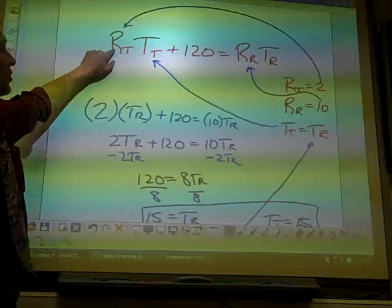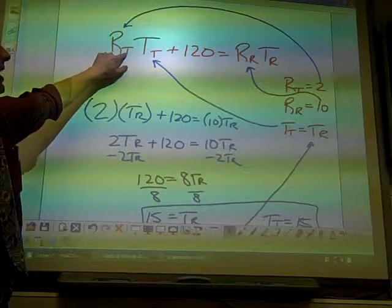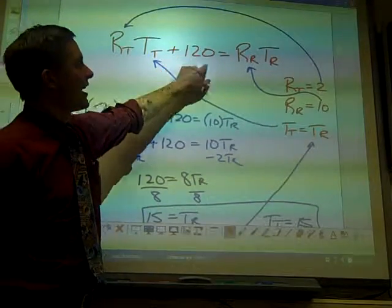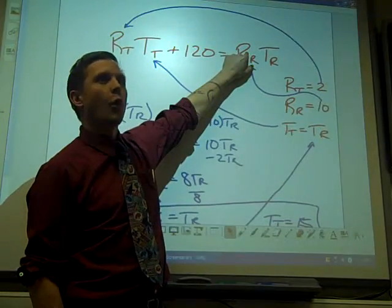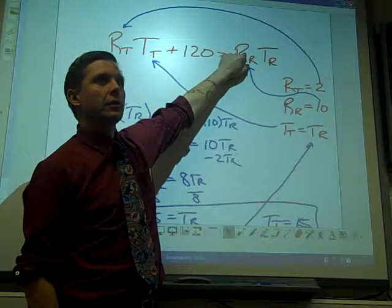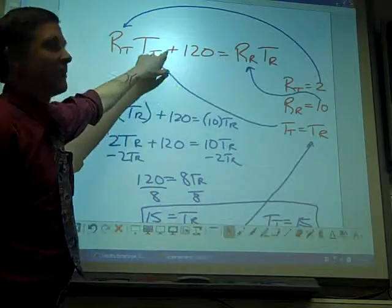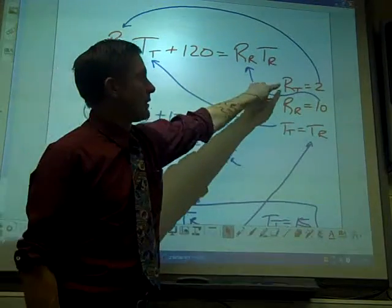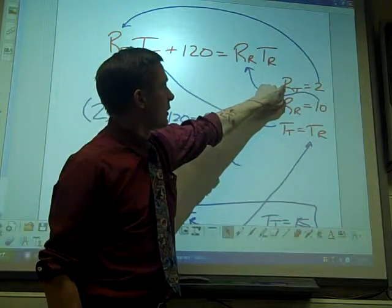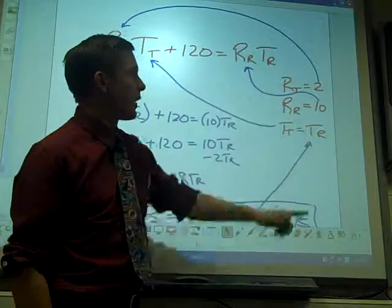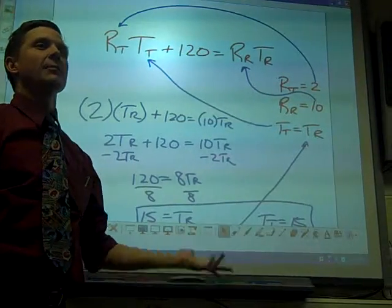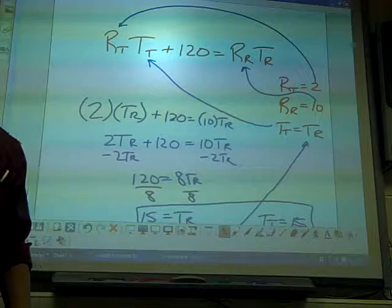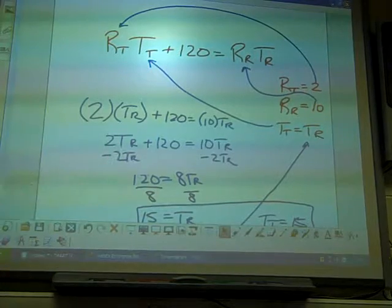This one says the distance Tom traveled was 120 miles less than the distance Roy traveled. The rate of Tom was 2, and the rate of Roy was 10, and their times are the same. Calculate how long they were on the road. These are going to become word problems. But before we get to breaking these down from story problems into equations, we want to become very good at the equations.